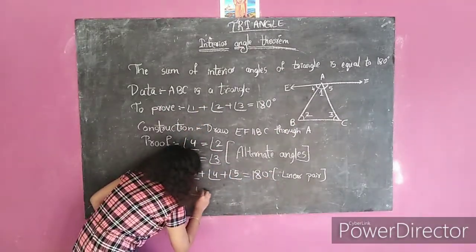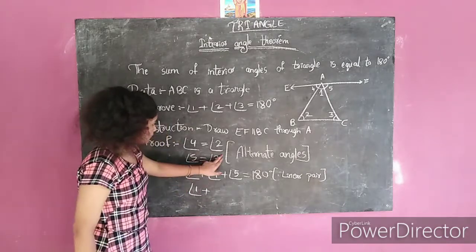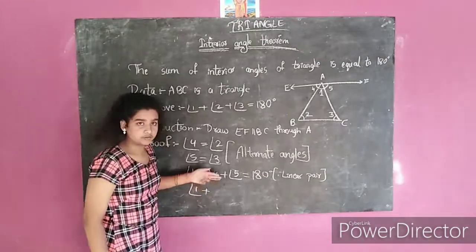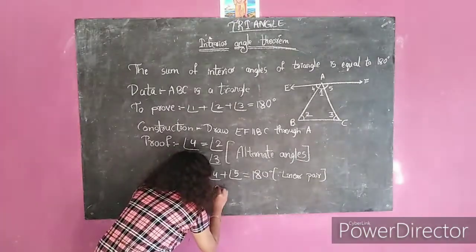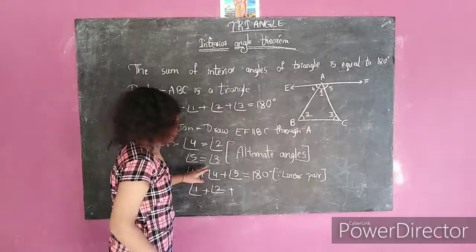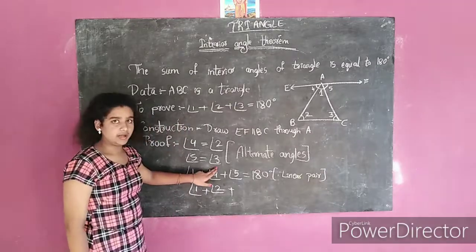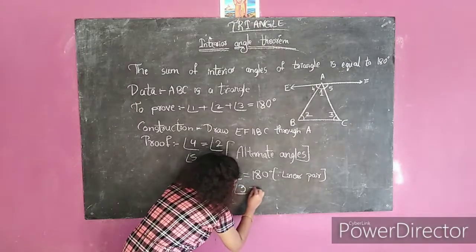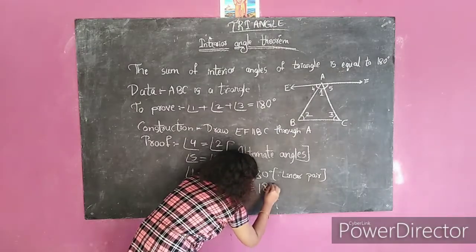By substitution, if angle 4 equals angle 2, you can write angle 2 instead of angle 4. Since angle 5 equals angle 3, we can write angle 3 instead of angle 5. So angle 1 plus angle 2 plus angle 3 equals 180 degrees.